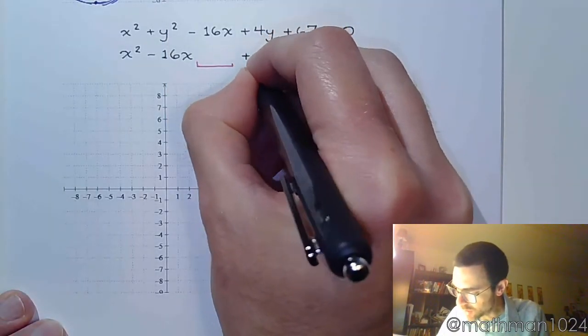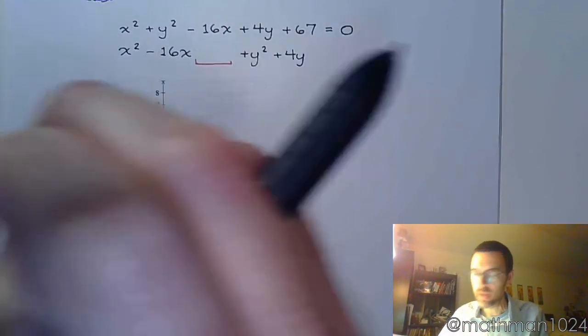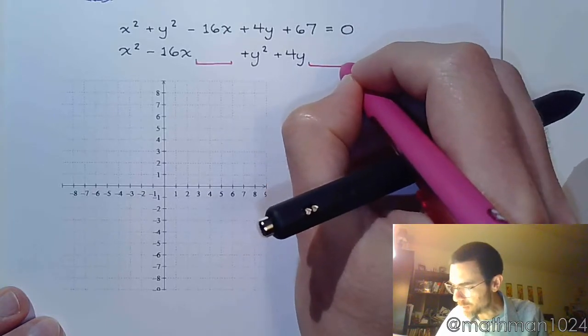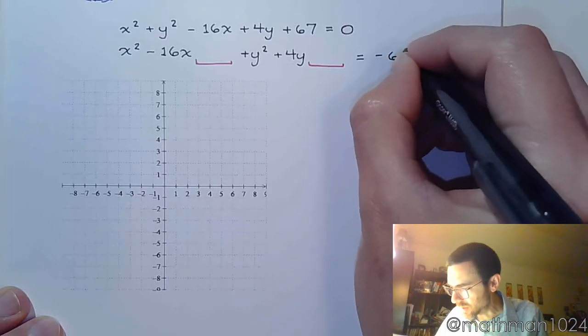And then we've got plus y squared plus 4y. And create another gap. And we move that constant to the other side to make that negative 67.